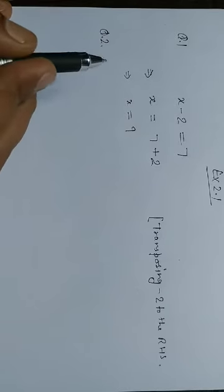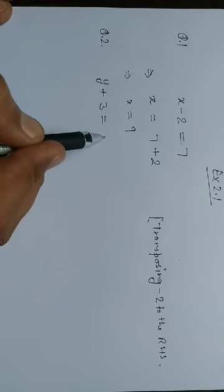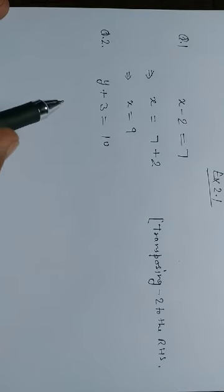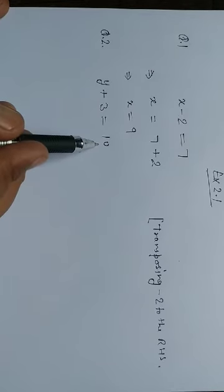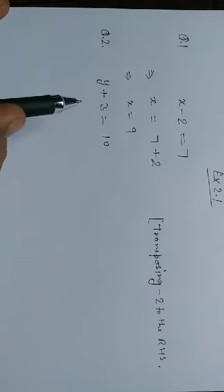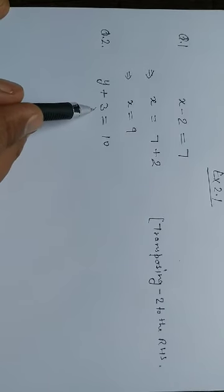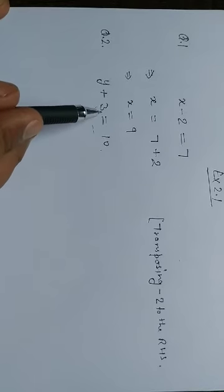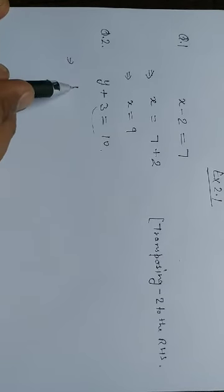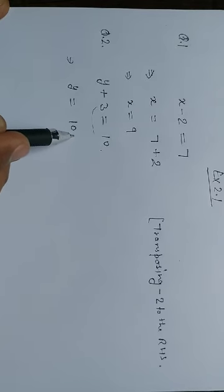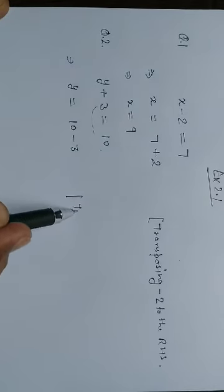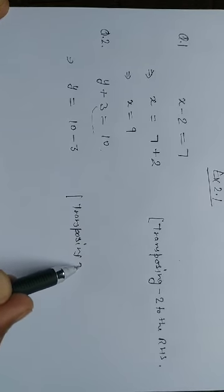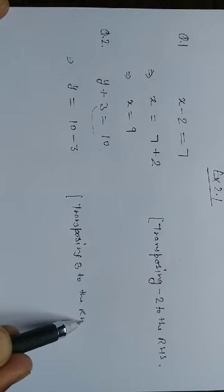Question number 2: y plus 3 is equal to 10. Transposing plus 3 to the right hand side, it becomes minus 3. So that implies y is equal to 10 minus 3, which is 7. This is the answer.